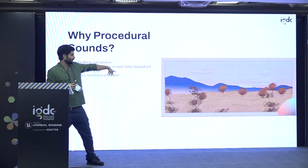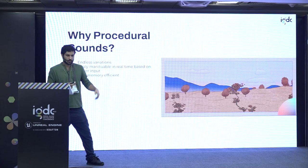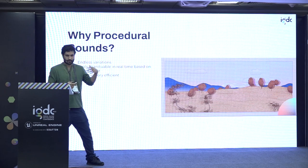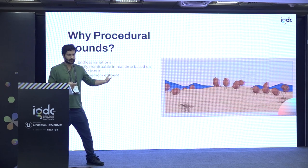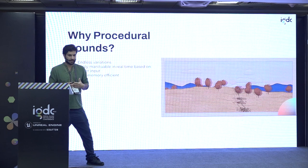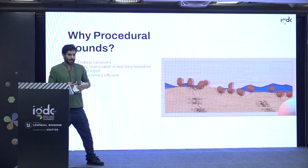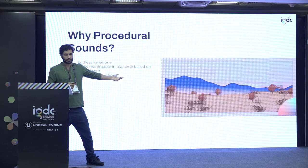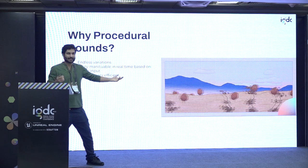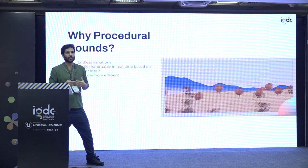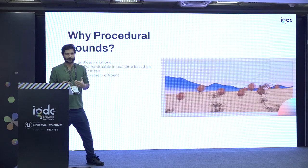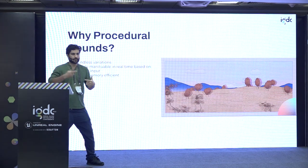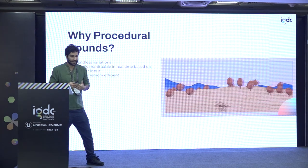For example, the image you see here is all done procedurally in a shader. No image is being used, no texture is being used — everything is defined mathematically. One of the main advantages is that this can run for 20 hours and practically no one is going to notice a repetition; there's no point where the loop starts again.